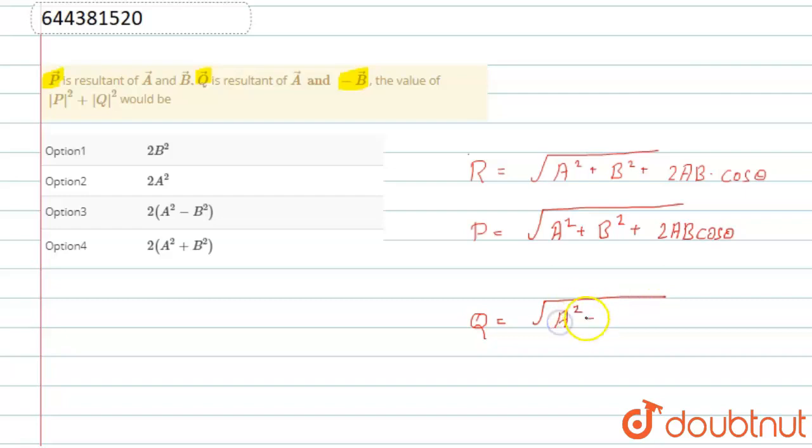A square plus B square, now it's not like B will become minus B, but it will become minus cos theta, because direction is basically reversed. So finally, it will come out to be Q is equal to root over A square plus B square minus two AB cos theta.